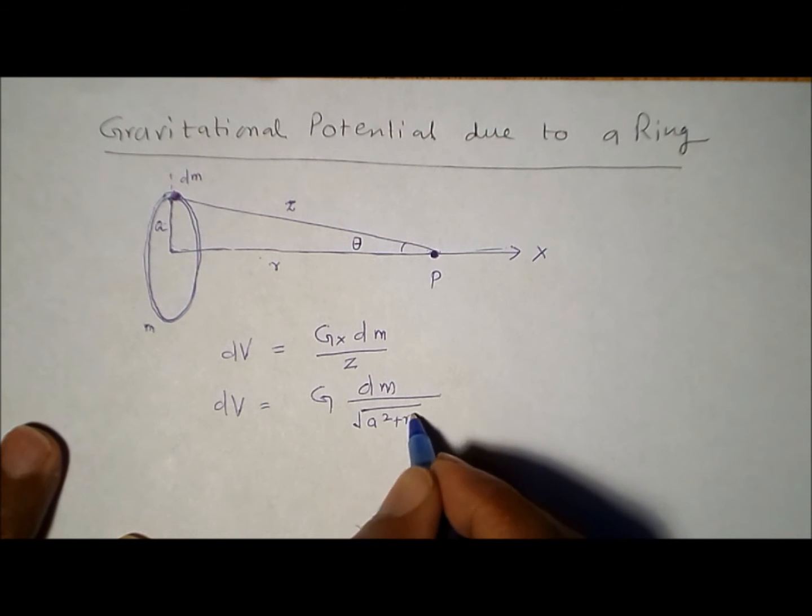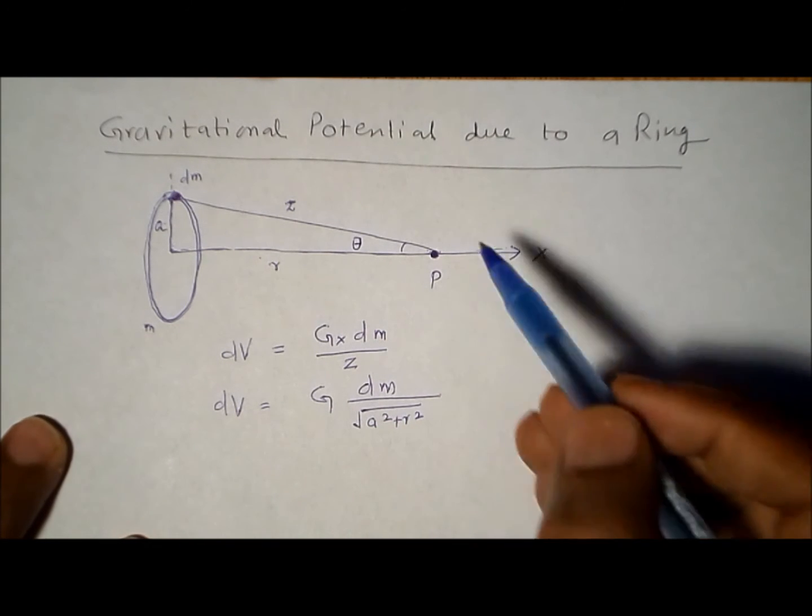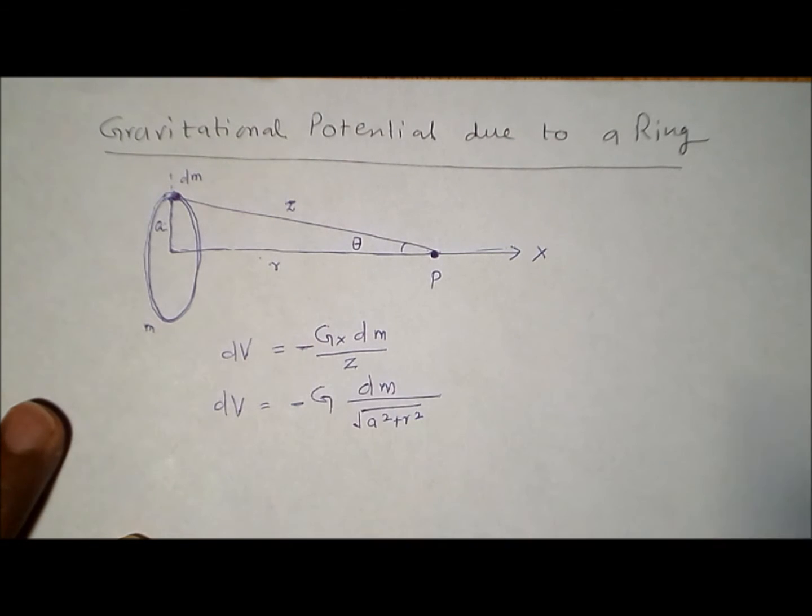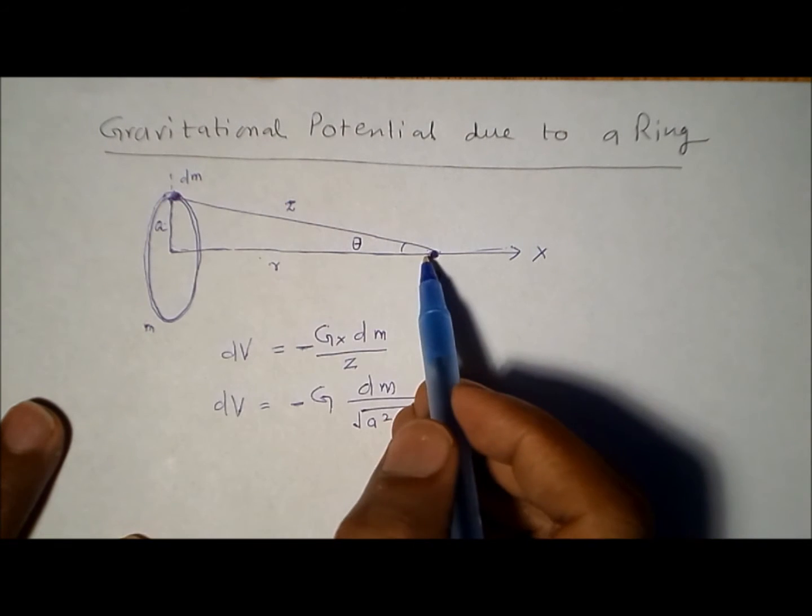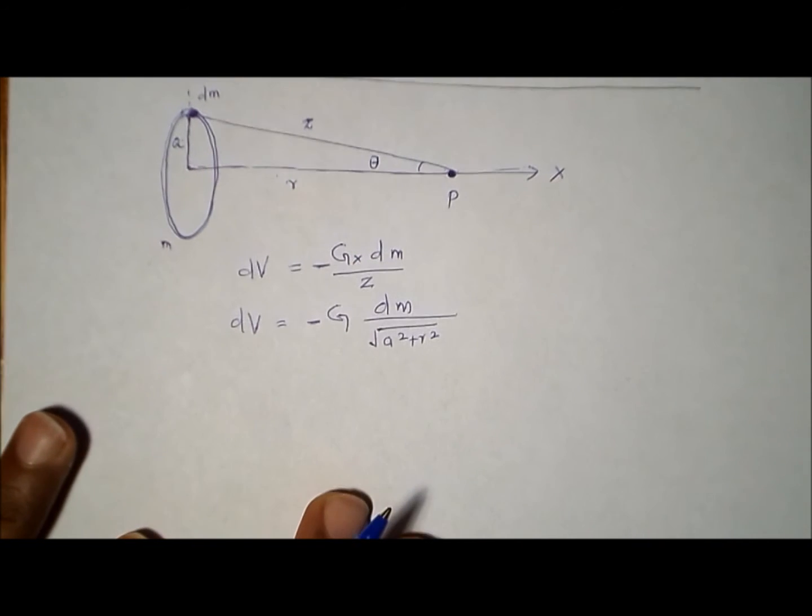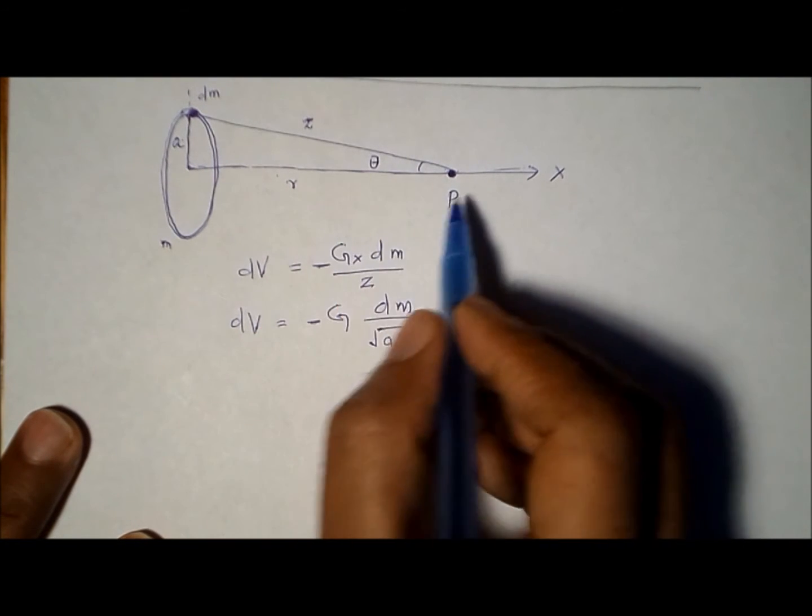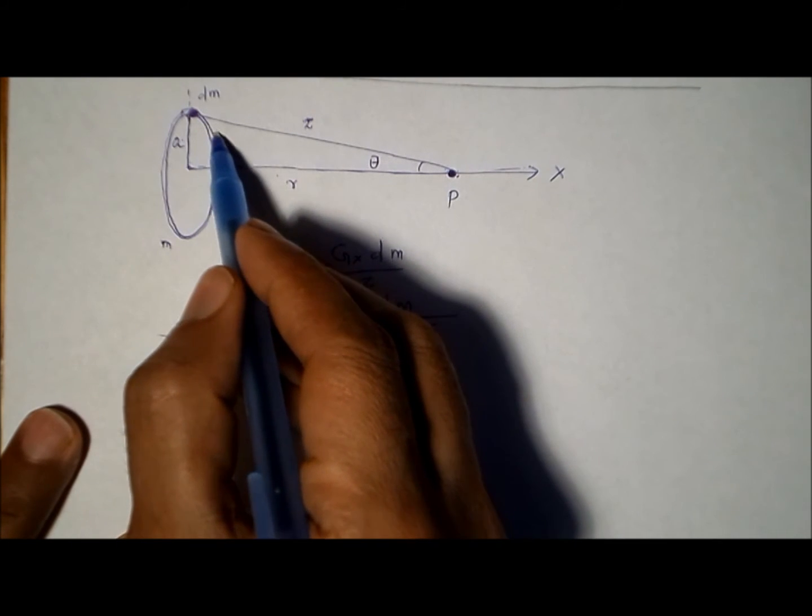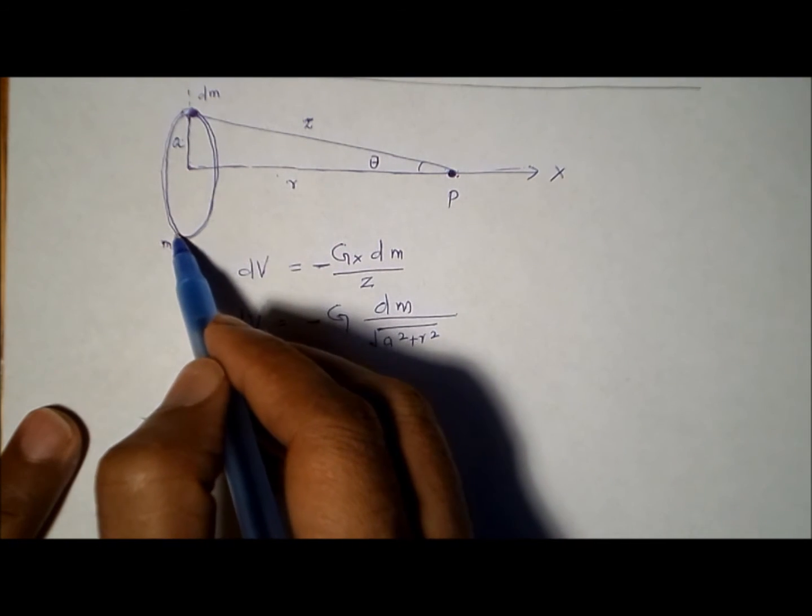We can write Z as square root of a squared plus r squared. Of course, we have a negative sign because the gravitational potential is negative. It's actually not the work we do to create this system, but we get the work—that's why this potential is negative. The total potential at P is the sum of the potential due to all these small dm masses.